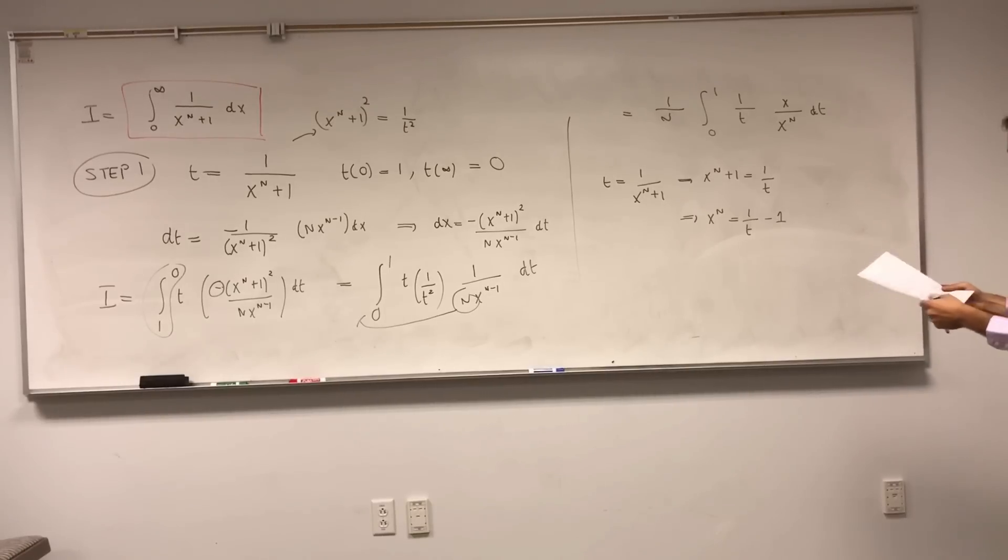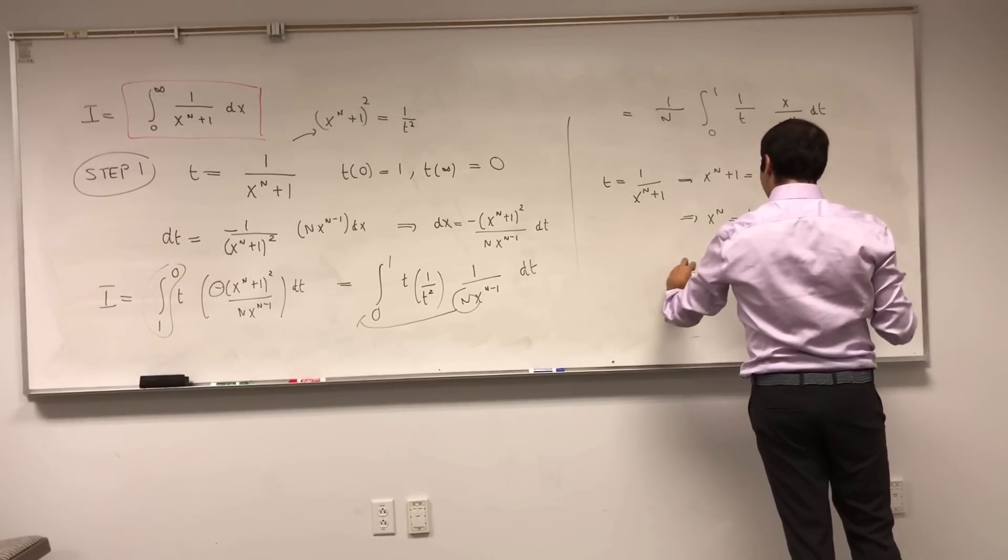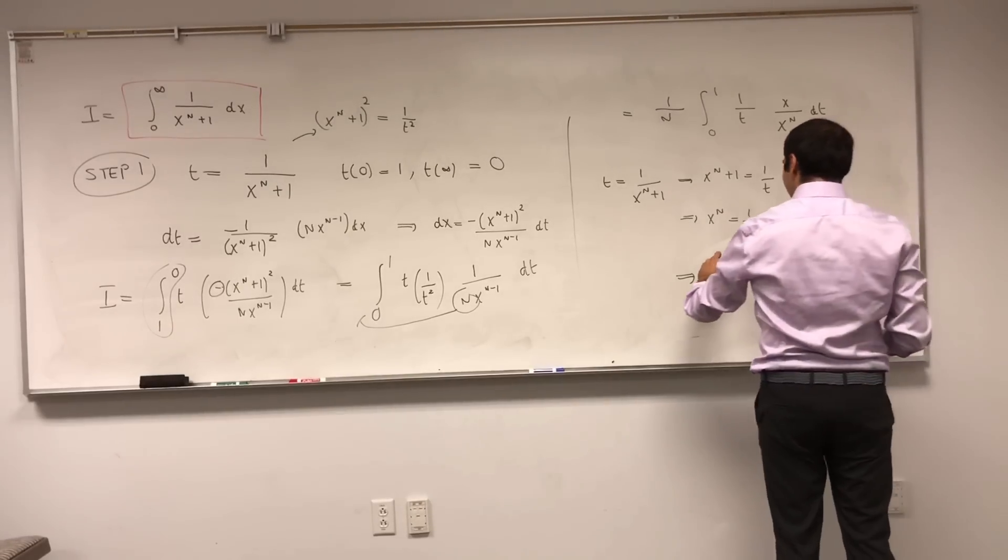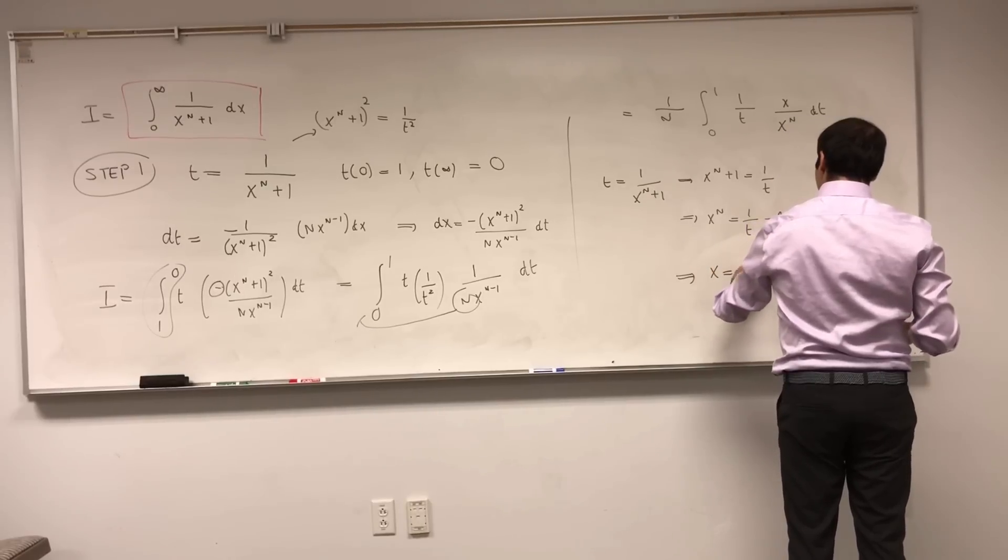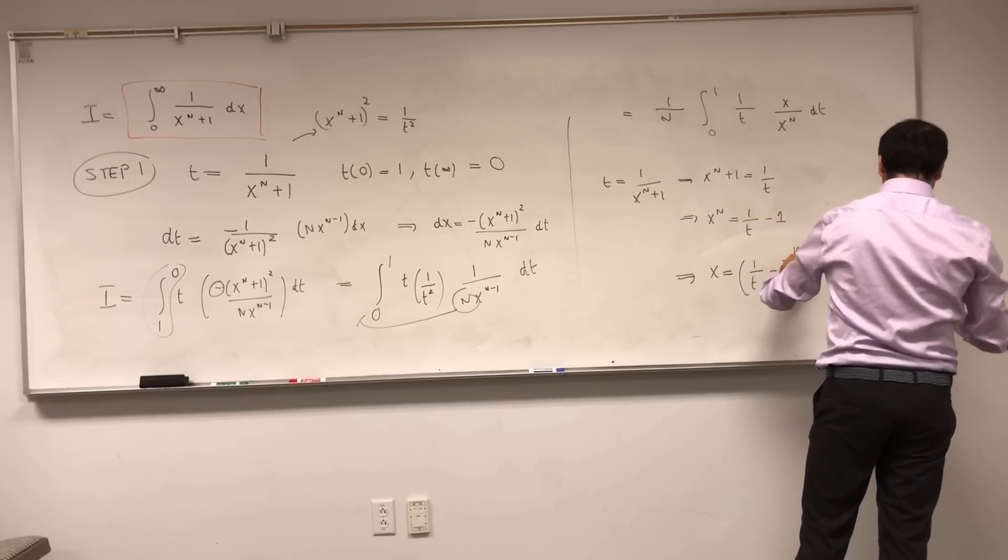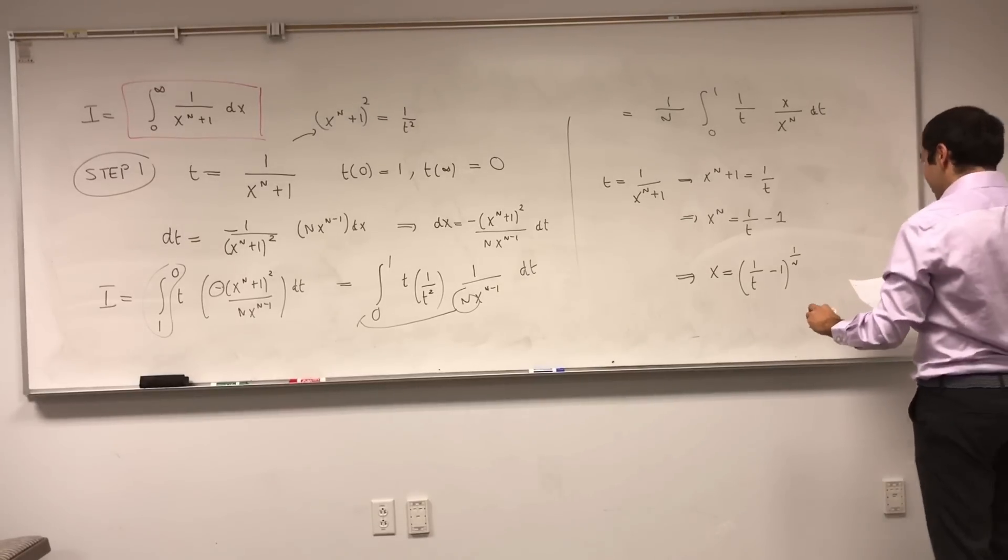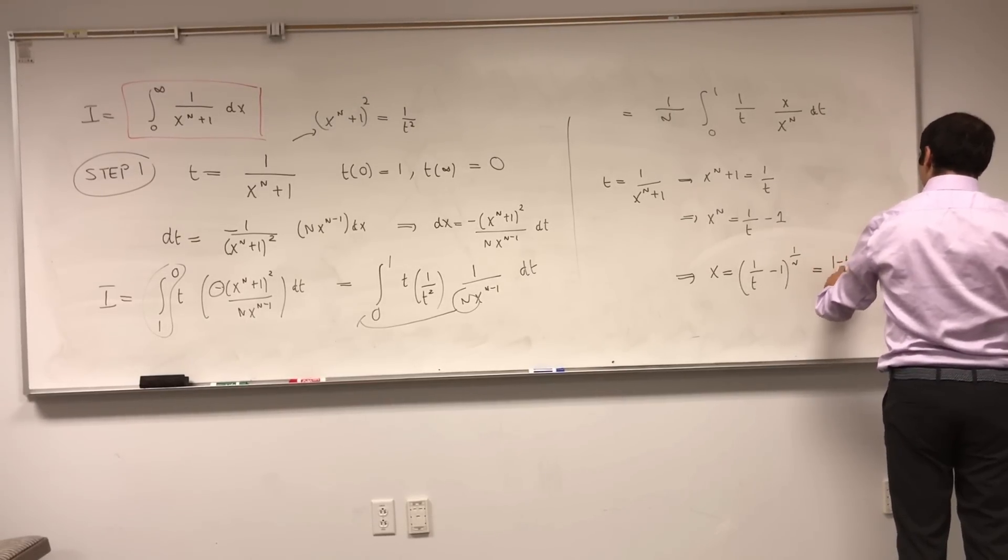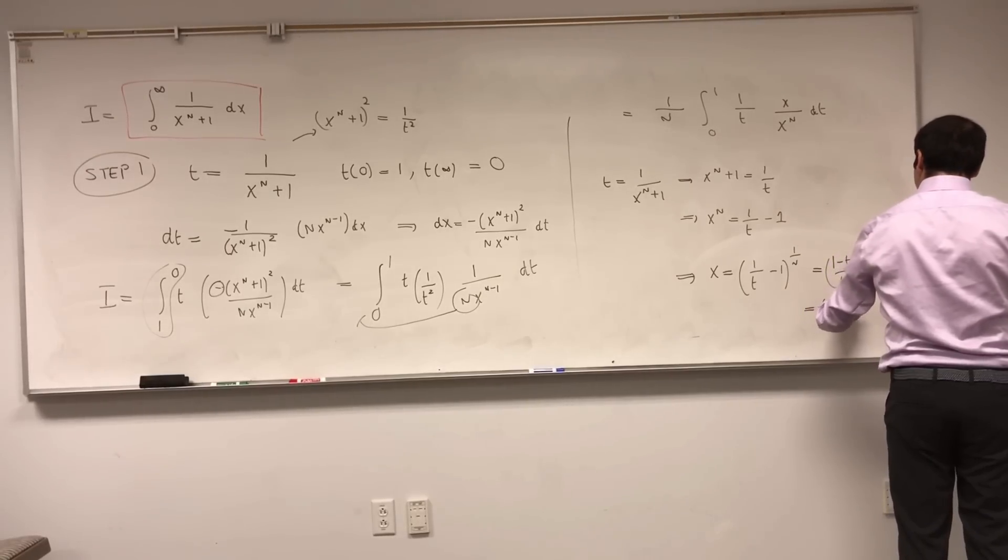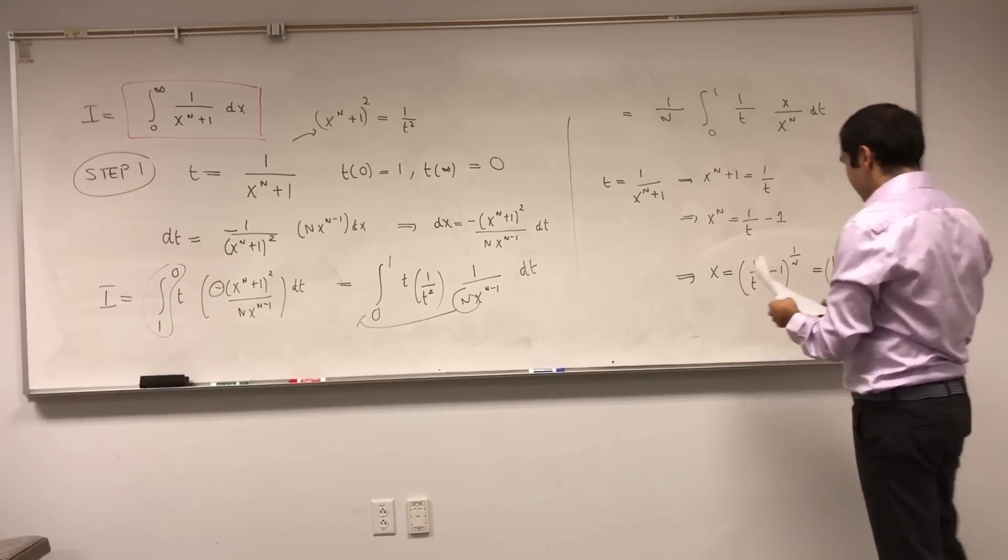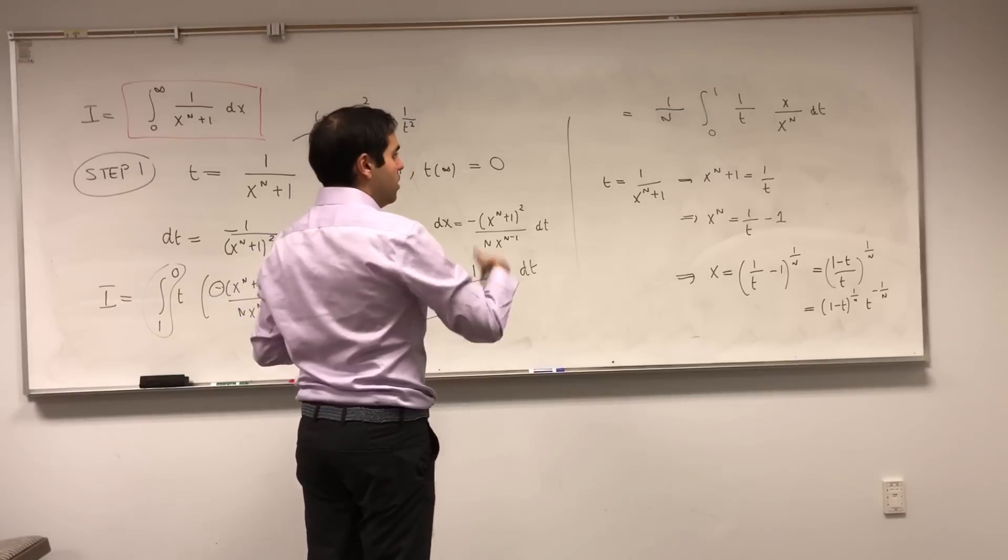Even better, let's just put it on the common denominator, so we have 1 minus t over t to the 1 over n, and that's the same thing as 1 minus t to the 1 over n times t to the minus 1 over n. And now that's nice, we have everything in an integral, and we have everything in terms of t.